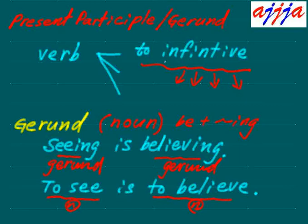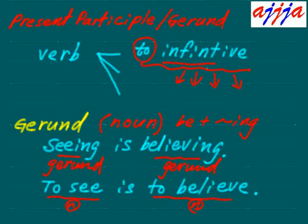Infinitive means too many — there are too many different ways to use it, that's why we call it infinitive. 'To go' is a to-infinitive. If you just use 'go' without 'to,' that's a bare infinitive.